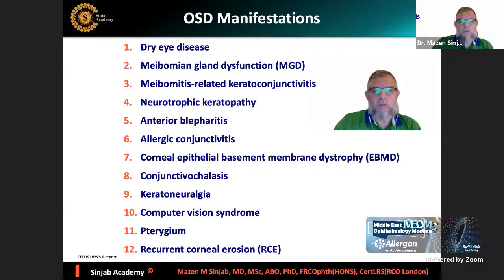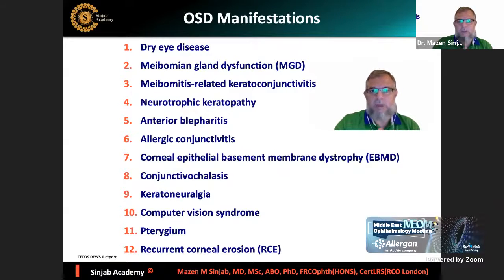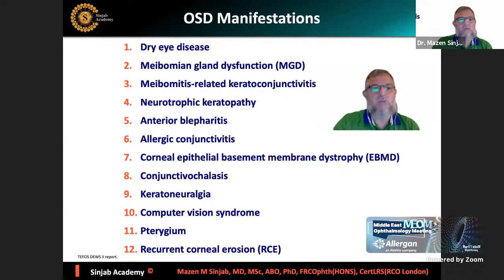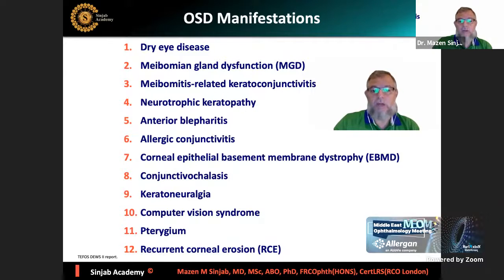The ocular surface disease has many manifestations. Part of it is dry eye, but we cannot say that ocular surface disease means dry eye - it is just part of it. Other manifestations include meibomian gland dysfunction, meibomitis-related keratoconjunctivitis, neurotrophic keratopathy, anterior blepharitis, allergic conjunctivitis, corneal epithelial basement membrane dystrophy, conjunctival chalasis, keratoneuralgia, computer vision syndrome, pterygium, and recurrent corneal erosion syndrome.